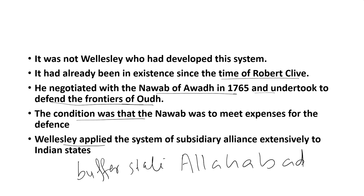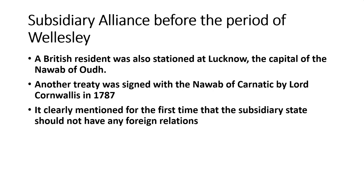Under the treaty, the English East India Company took over the defence of the frontiers of Awadh, making Awadh a buffer state. Awadh had been acting as a buffer state since 1765, and the British army was stationed there — for which the Nawab of Awadh was required to meet the expenses of maintenance of the British troops. A British resident was also stationed at Lucknow, the capital of the Nawab of Awadh.